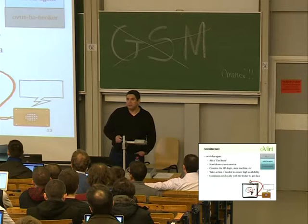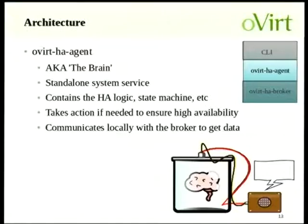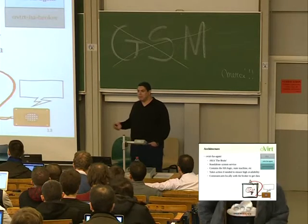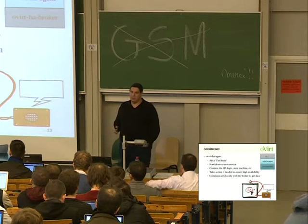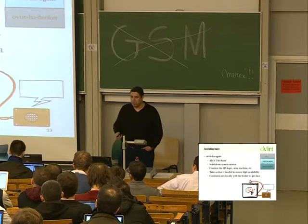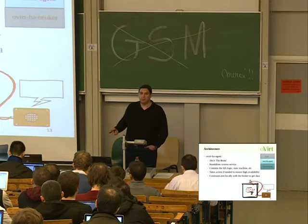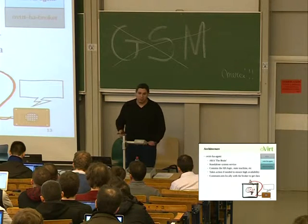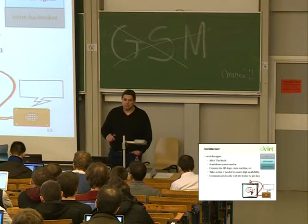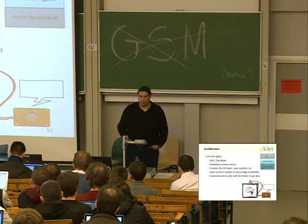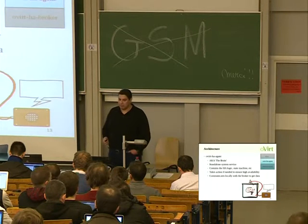Moving to the next level, we have the HA agent — or as we call it, the brain. That's the component that has the state machines, the logic, everything related to high availability. It's a standard system service — it can crash and burn, and we have another one that will handle that situation. If something wrong happens to the VM, then that module will take action: either restart the VM, migrate it, or do something else based on the state machine relevant to that situation.